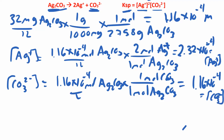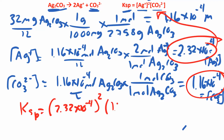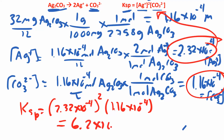Now we plug those concentrations into the Ksp expression: Ksp = (2.32 × 10⁻⁴)² × (1.16 × 10⁻⁴), which works out to 6.2 × 10⁻¹², which is pretty small.